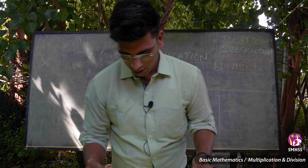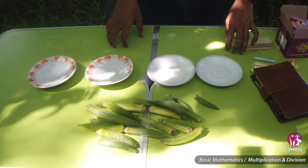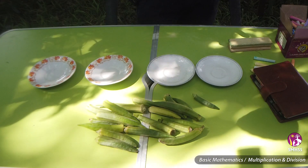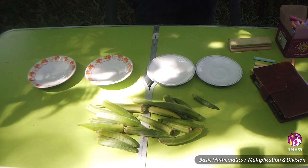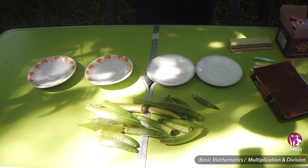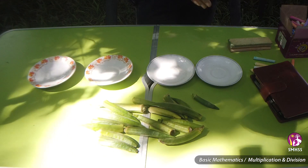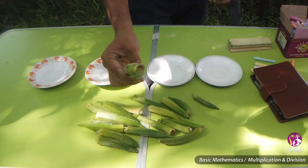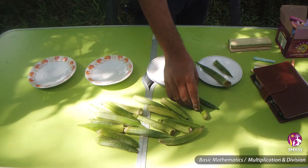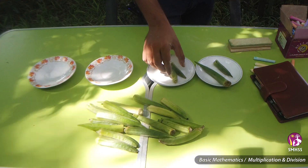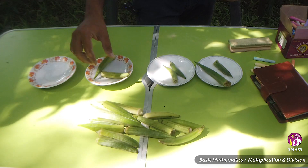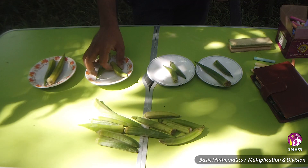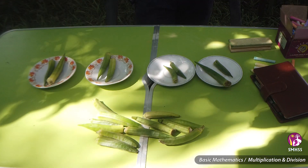I will show you an example. You have a bunch of ladies fingers here. The condition is you want to distribute two ladies fingers for each plate. So, I will keep two, then two, then again two, then again two. This will go on.